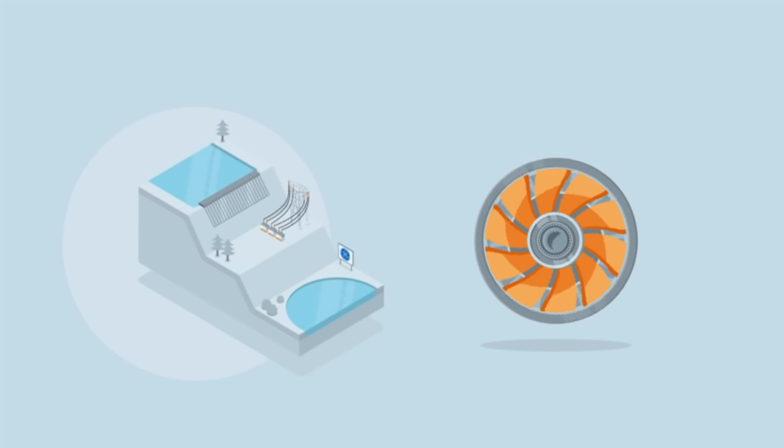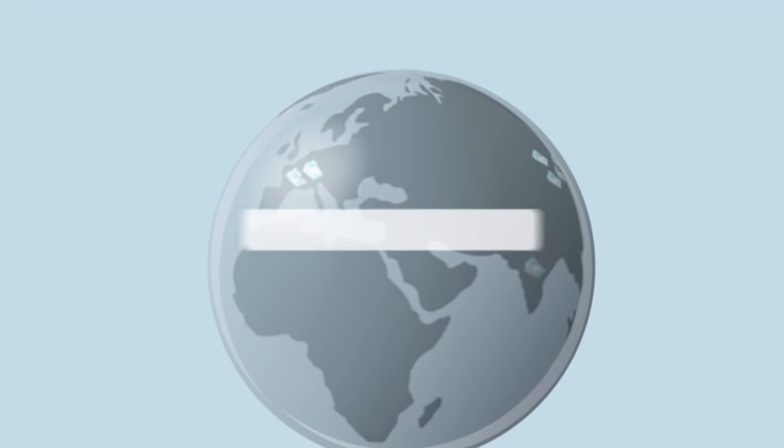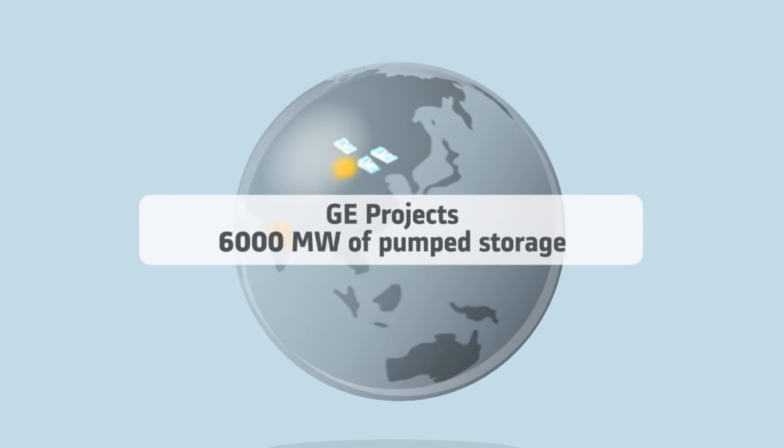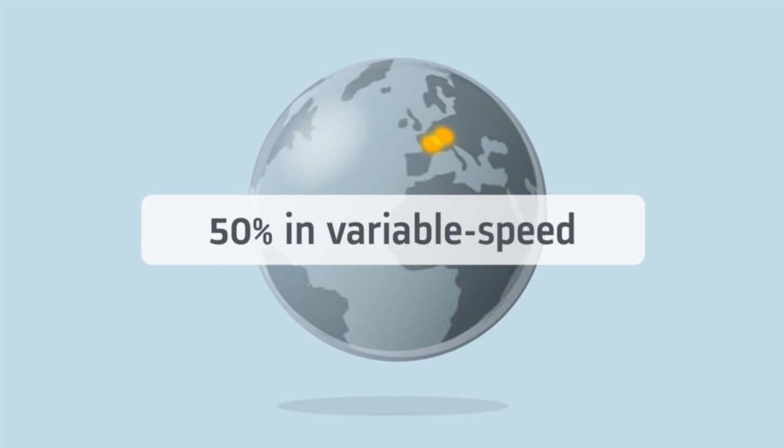Undisputed world leader with nearly 40% market share in pumped storage equipment, GE is currently developing more than 6,000 megawatts of projects around the world, including 3,000 megawatts in variable speed in Europe and India.